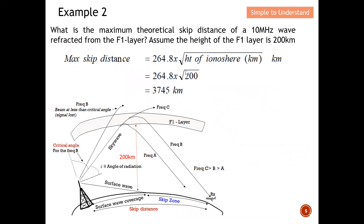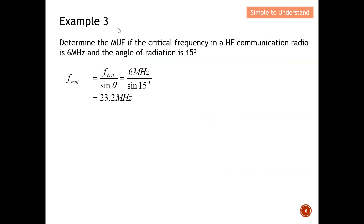To calculate the maximum skip distance, apply the formula: 4264.8 multiplied by the square root of the ionospheric layer height. The constant 4264.8 is fixed. Since the F1 layer height is 200 km, punching through the calculator gives a maximum skip distance of approximately 3745 km. That is example two.